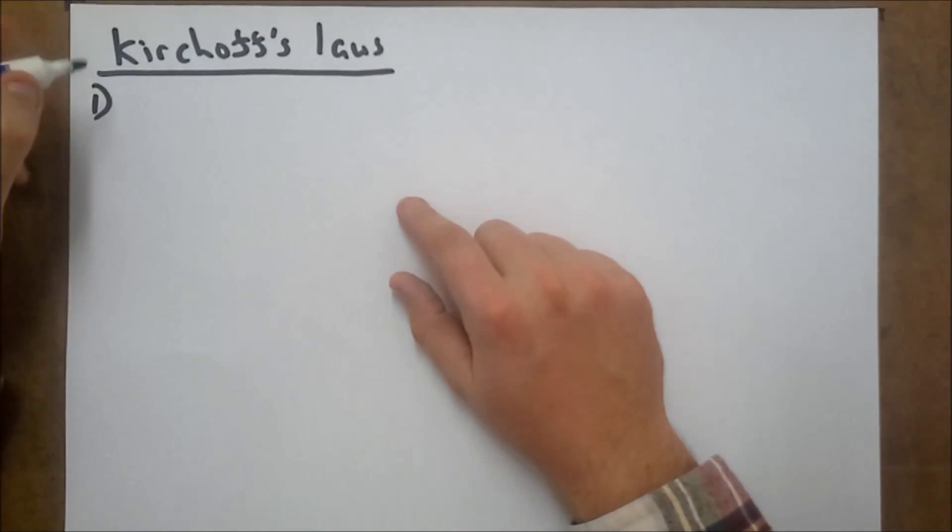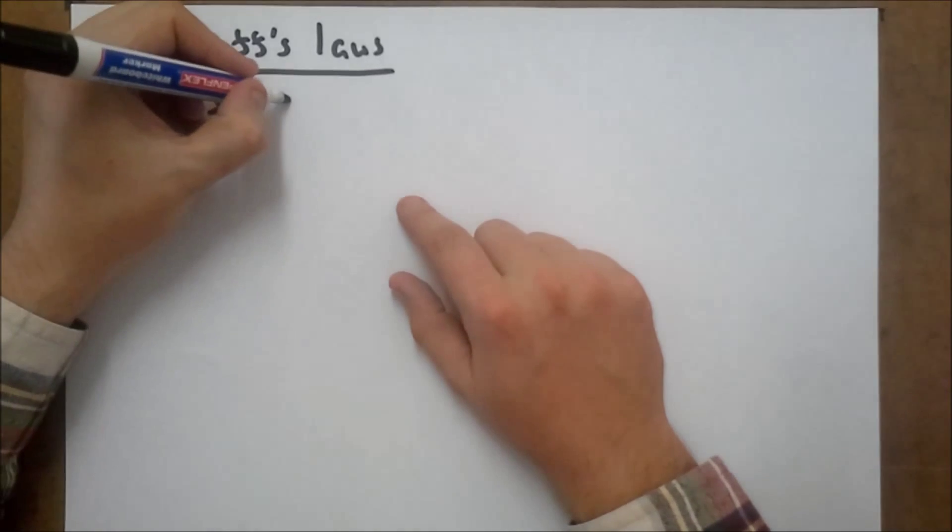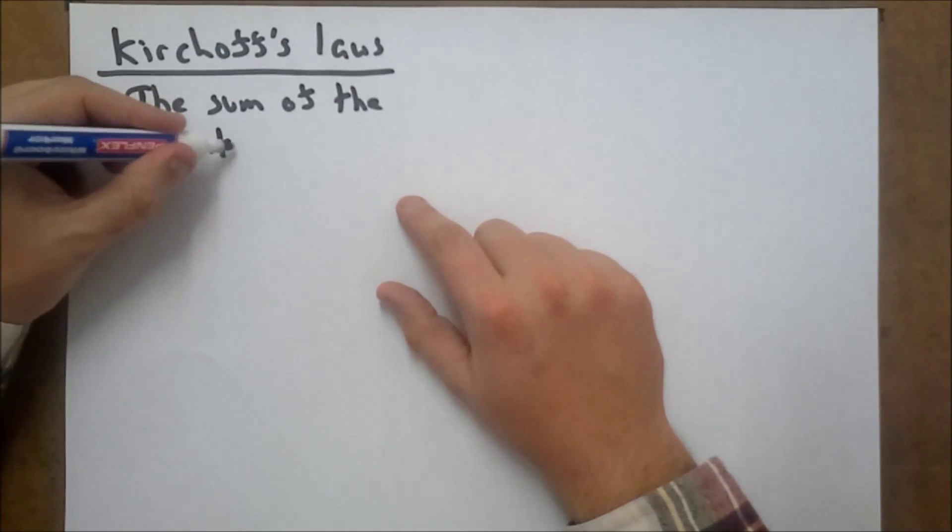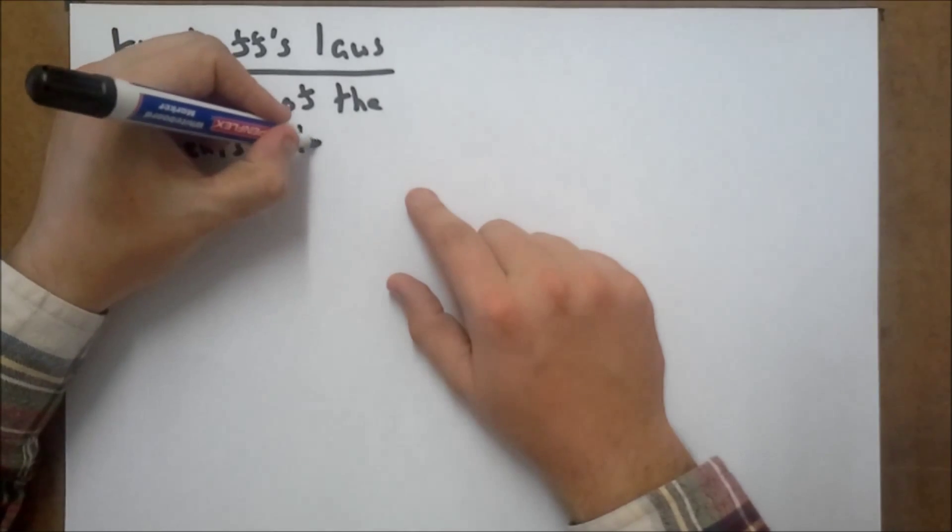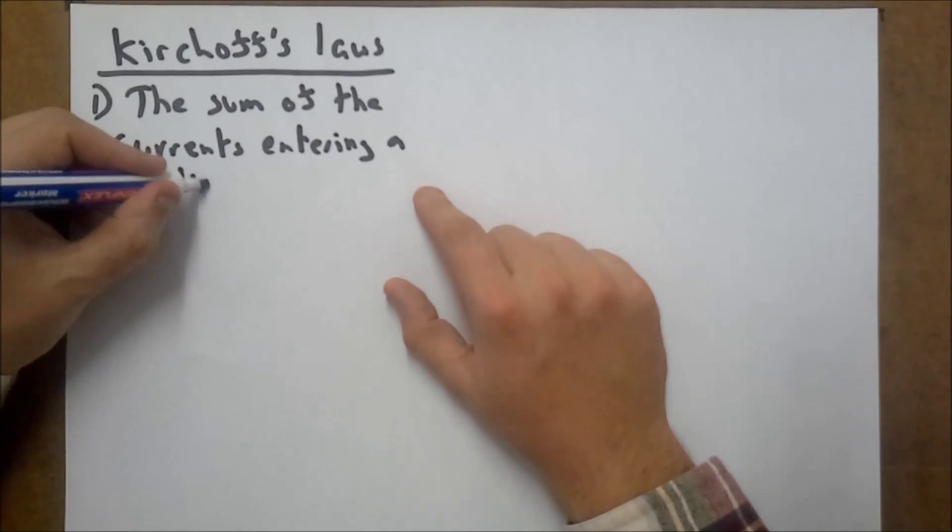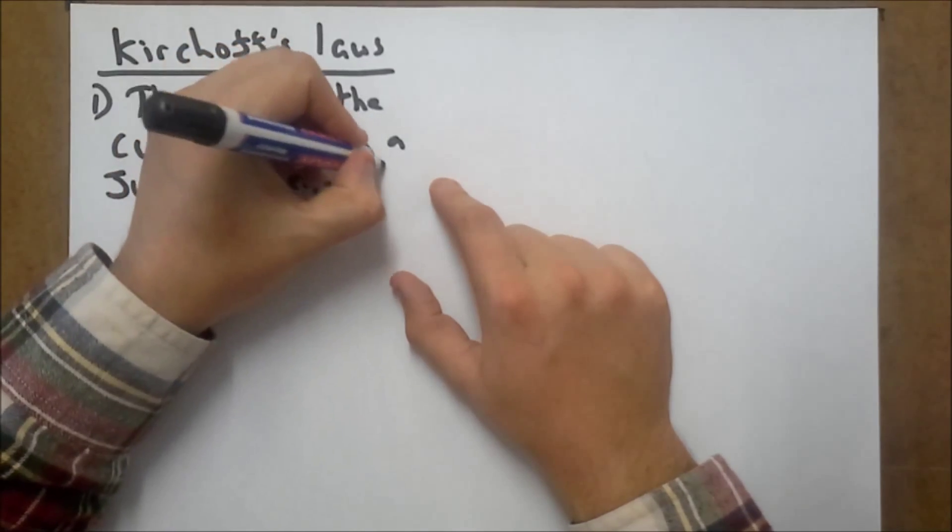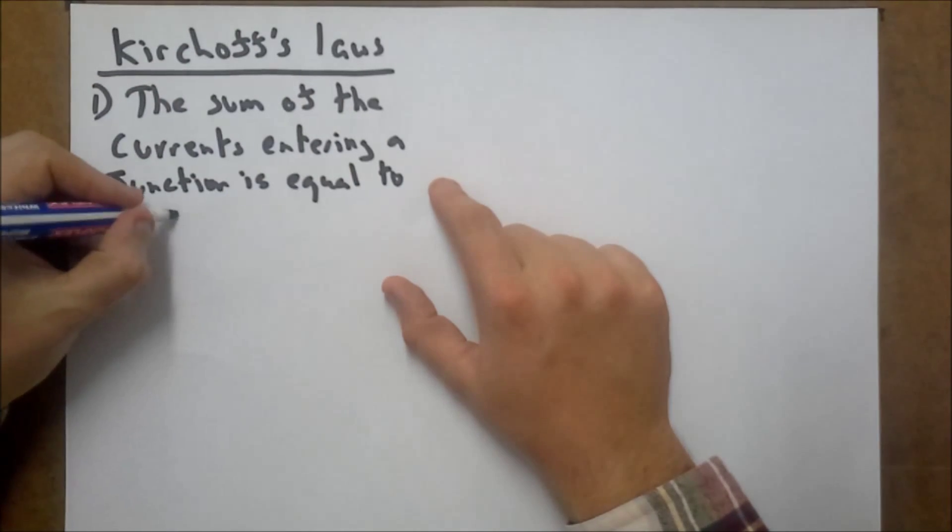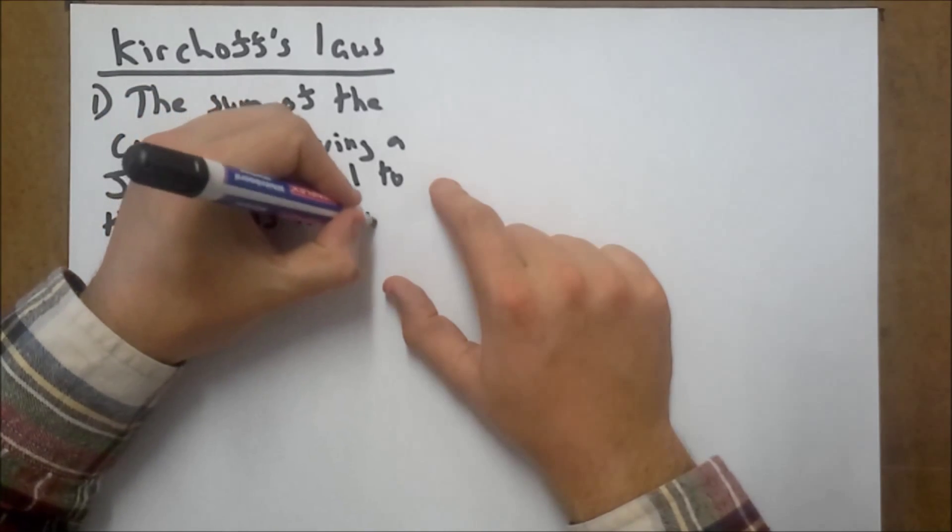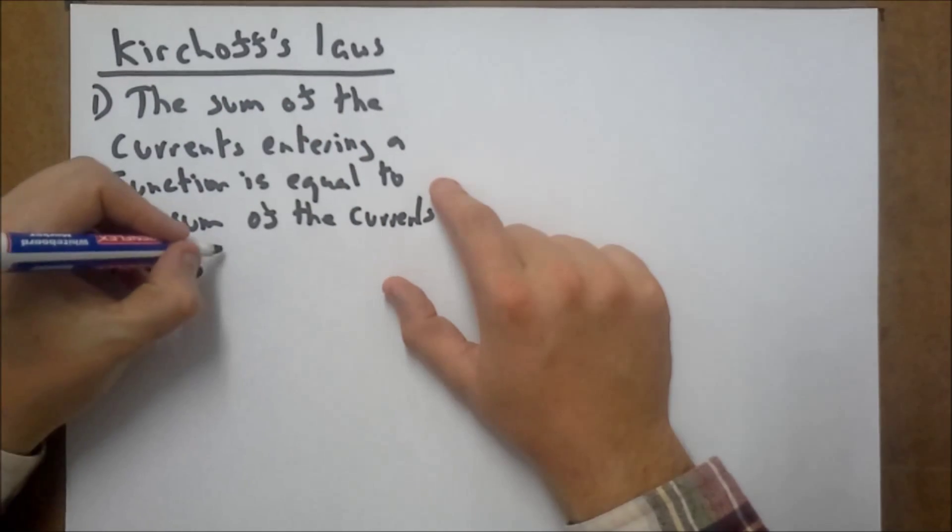The first law states that the sum of the currents entering a junction is equal to the sum of the currents leaving the junction.